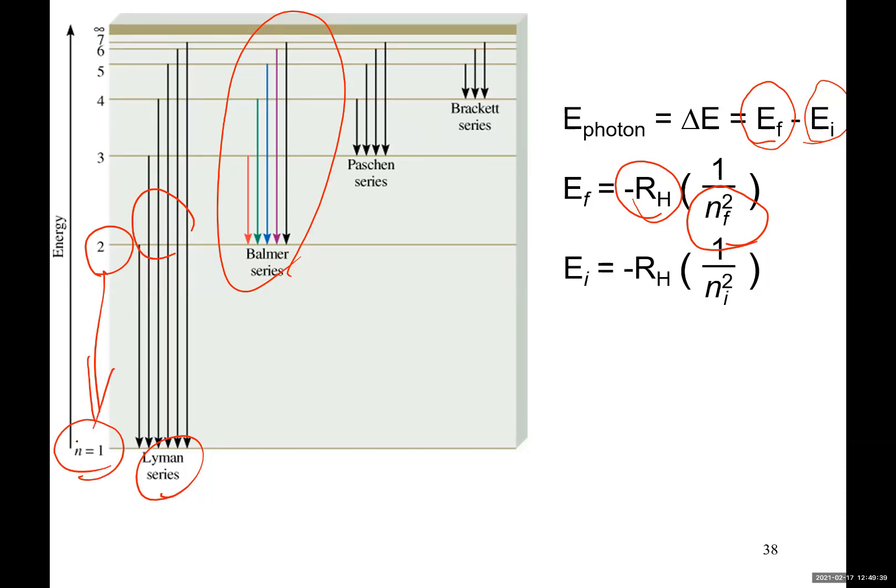So how much is the energy of electron before dropping? It's on second energy level. Principal quantum number equal to 2. So once electron is dropping, the difference between the two energy levels should give me energy of the photon which is emitted.